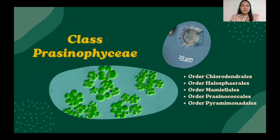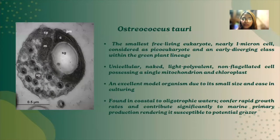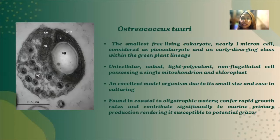Let's now move to class Prasinophyceae, where we have five orders: Chlorodendrales, Hallospirales, Mamiellales, Prasinococcales, and Pyramimonadales. Next is Osteococcus tauri, Kingdom Plantae, Subkingdom Viridiplantae, Phylum Chlorophyta, Class Prasinophyceae, Order Mamiellales, Family Mamiellaceae, Genus Osteococcus, and Species tauri. It is the smallest free-living eukaryote, nearly one micron in cell size, considered a picoeukaryote in an early-diverging class within the green plant lineage. It is unicellular, naked, non-flagellated, possessing a single mitochondrion and chloroplast. It is an excellent model organism due to its small size and ease in culturing. It is found in coastal to oligotrophic waters, confers rapid growth rates, and contributes significantly to marine primary production, rendering it susceptible to potential grazers.